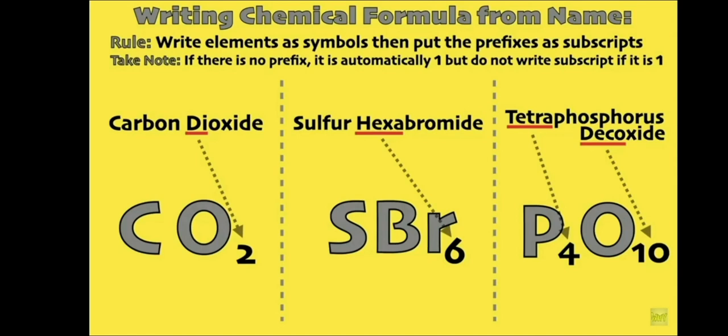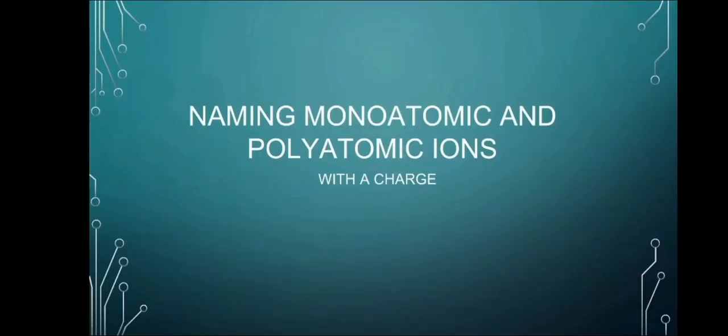Now, we write the final formula as P4O10. Because tetra means 4 and deco means 10. So 4 phosphorus, tetraphosphorus, 10 oxygen, decoxide. Don't be confused.